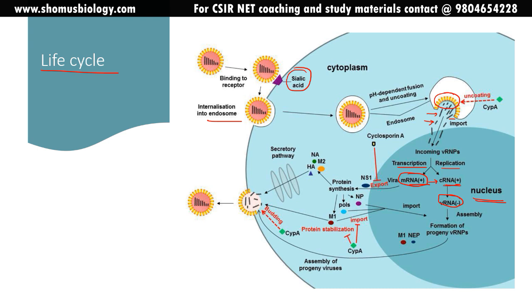Once minus-strand RNA is produced it can be used as the genetic material for new particles. The minus-strand RNAs are transported back into the cytosol, and the plus-strand viral mRNA is also transported into the cytoplasm, where protein synthesis begins. Protein synthesis always occurs from plus-strand mRNA, which is why its production is necessary; minus-strand RNA production is necessary to serve as the genetic material.